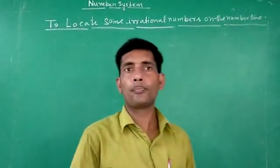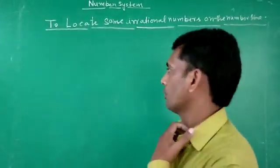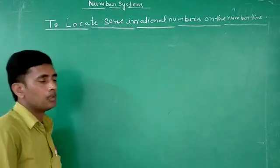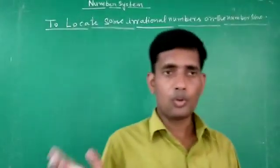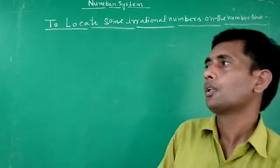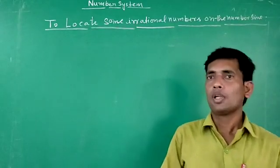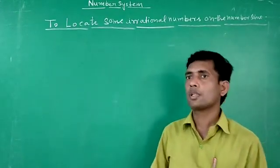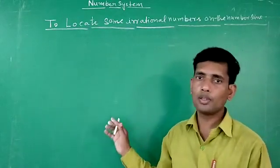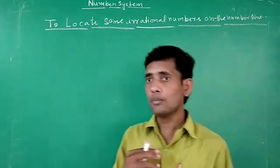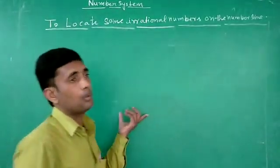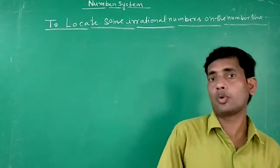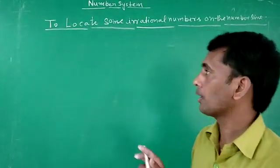In previous classes we have already learned about some numbers which are already located on the number line. The number line includes natural numbers, whole numbers, and irrational numbers. In class 9, we will learn how to locate irrational numbers on the number line.